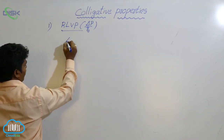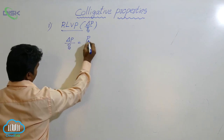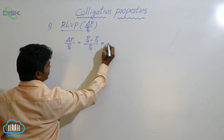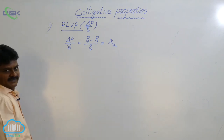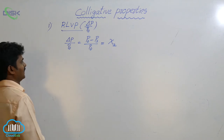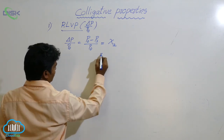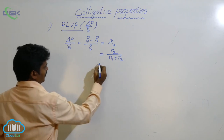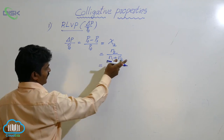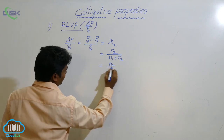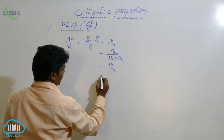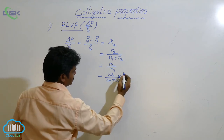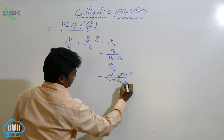The formula for RLVP is: ΔP/P₀ = (P₀ - Ps)/P₀, which is equal to the mole fraction of solute, N₂/(N₁ + N₂). For a dilute solution, N₁ is far greater than N₂, so we can approximate N₁ + N₂ ≈ N₁, simplifying the mole fraction to N₂/N₁.